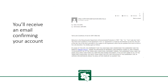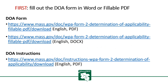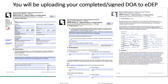Once you've completed the registration process, you'll receive an email confirming your account. To submit a Determination of Applicability or DOA to MassDEP, first fill out the Determination of Applicability form in Word or the fillable PDF format. The forms and DOA instructions can be found on the Mass.gov website. You will be uploading your completed and signed DOA to EDEP, so this is a critical first step.